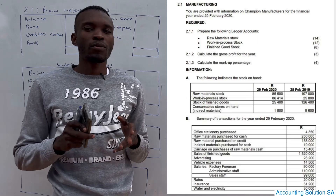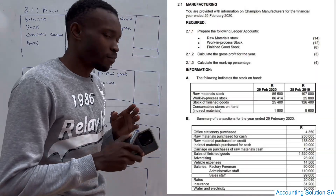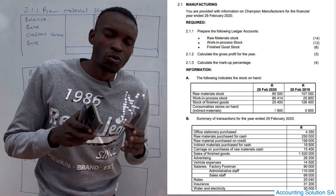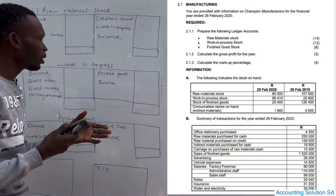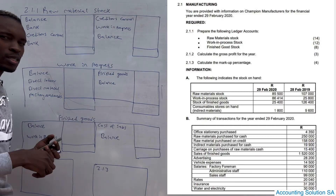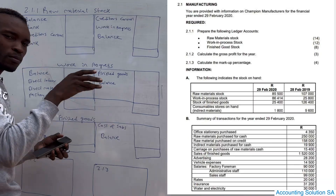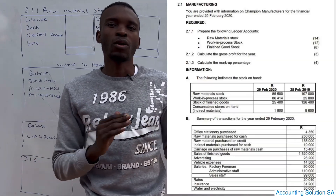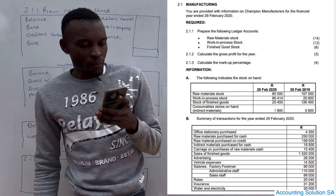When we talk about raw material, remember under manufacturing we are talking about a business that sells a product that they produce on their own. So obviously the first step when they produce goods, they must buy material. If you are in a business to produce chairs and tables, obviously you must buy wood. So that's why this account is the first one - we buy material first. Work in progress is the same as production, then we produce, and when we produce we transfer them to finished goods. From there that's where we can calculate cost of sales, markup, and all those other things.